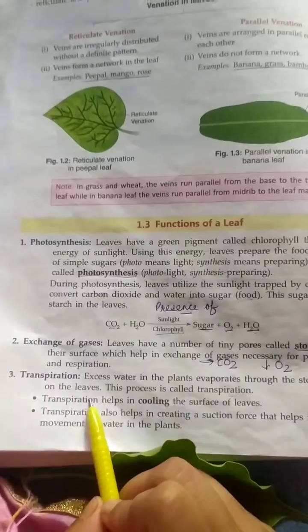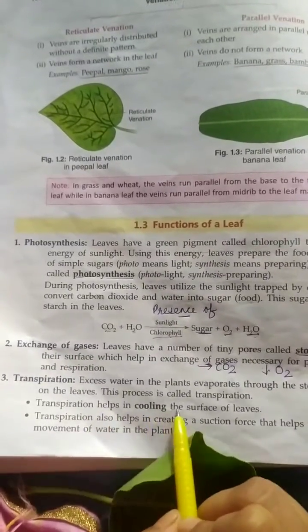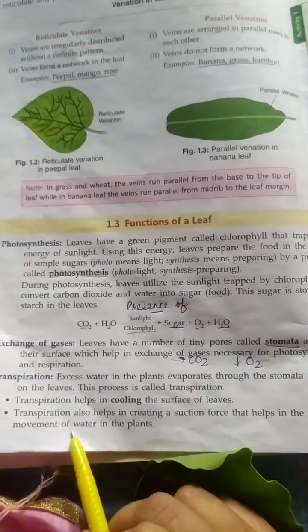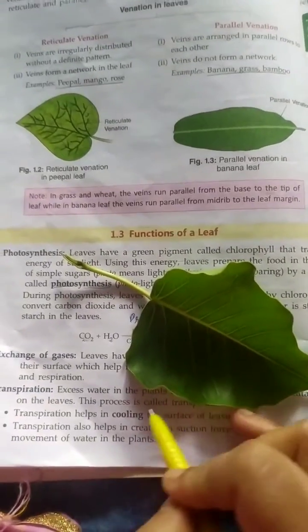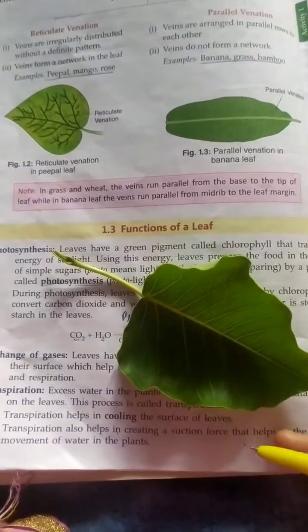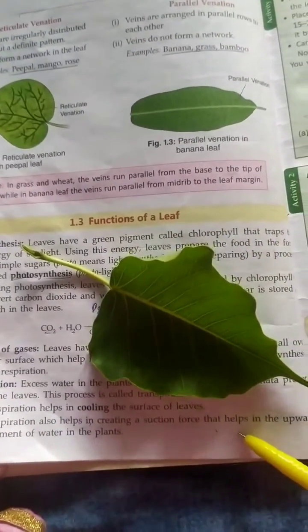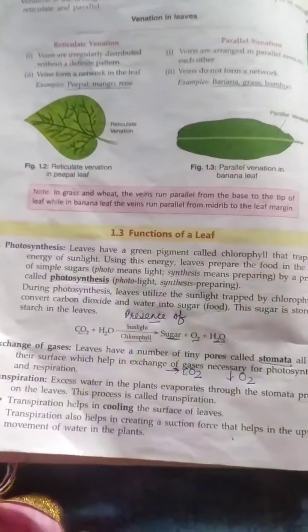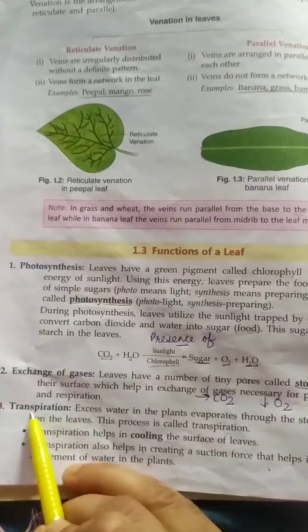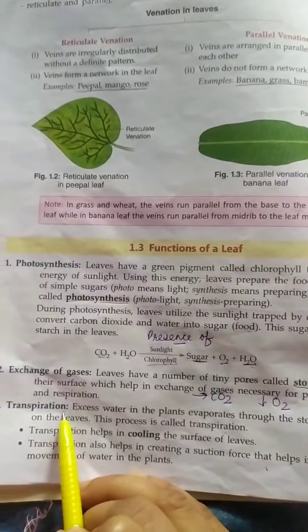The main functions of transpiration are: it helps in cooling the surface of the leaf, and it also creates a suction force that helps in the upward movement of water in the plants — from the root system to the shoot system. Generally we give water at the roots, and through transpiration the suction force carries that water to the top of the plant. In the next video I will show an activity which demonstrates transpiration in plants.